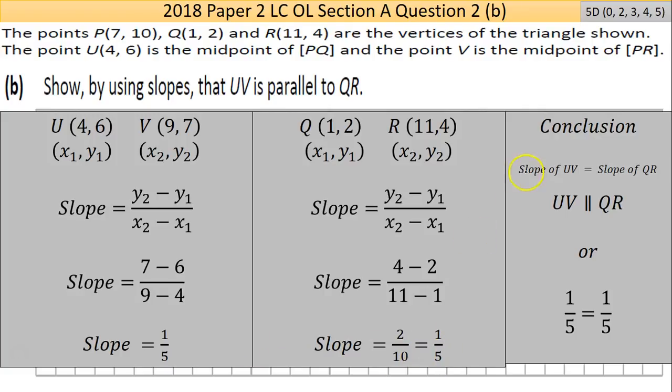Basically your conclusion is: is the slope of UV equal to the slope of QR? Yes. I can say that by using the parallel lines here, mathematical language: UV is parallel to QR, or I could just state the two slopes. They all should be acceptable.